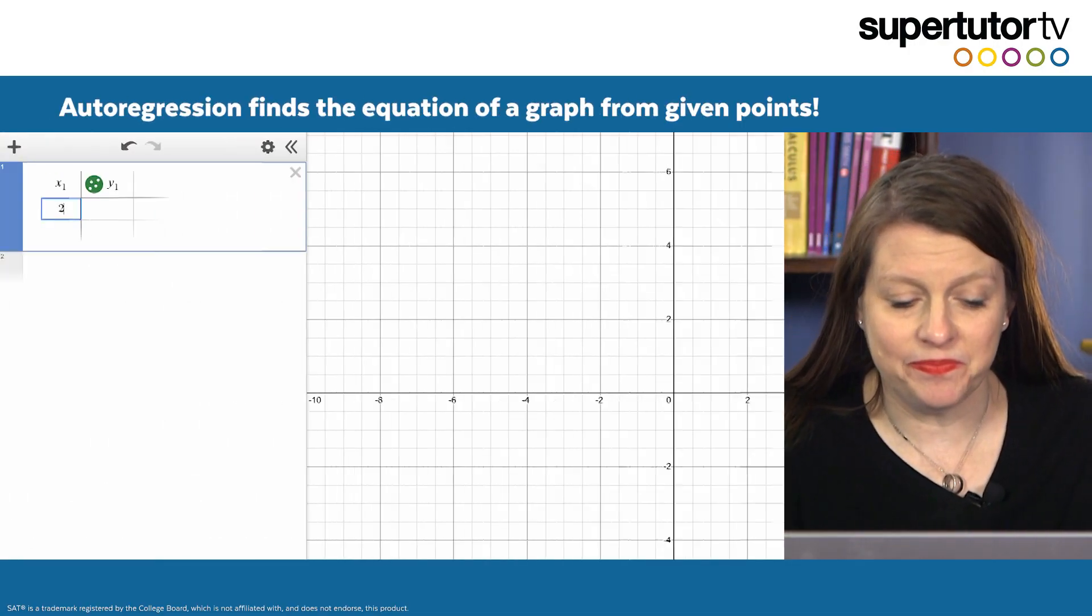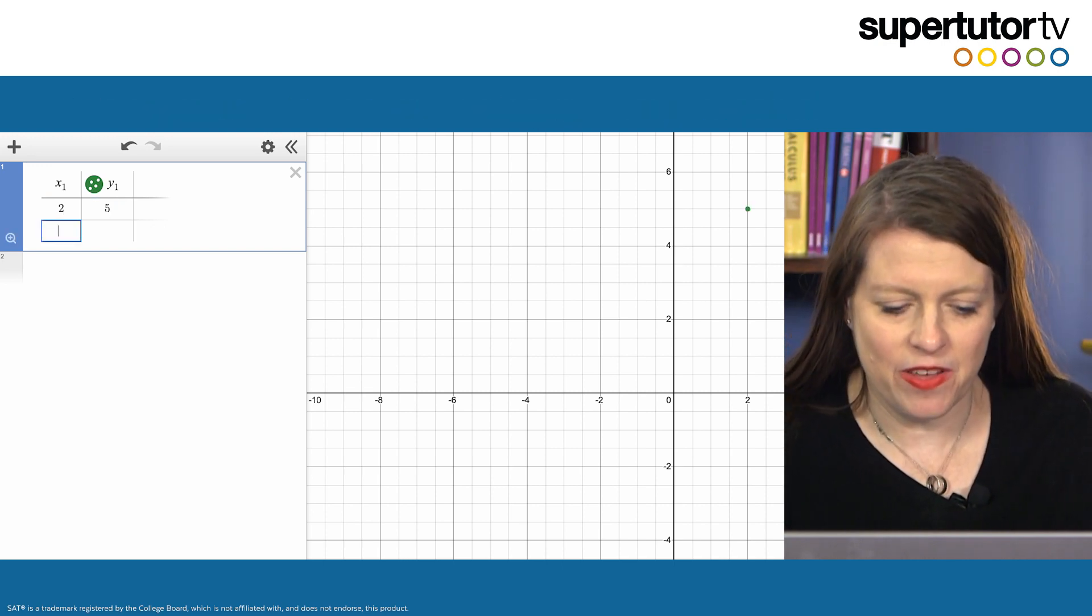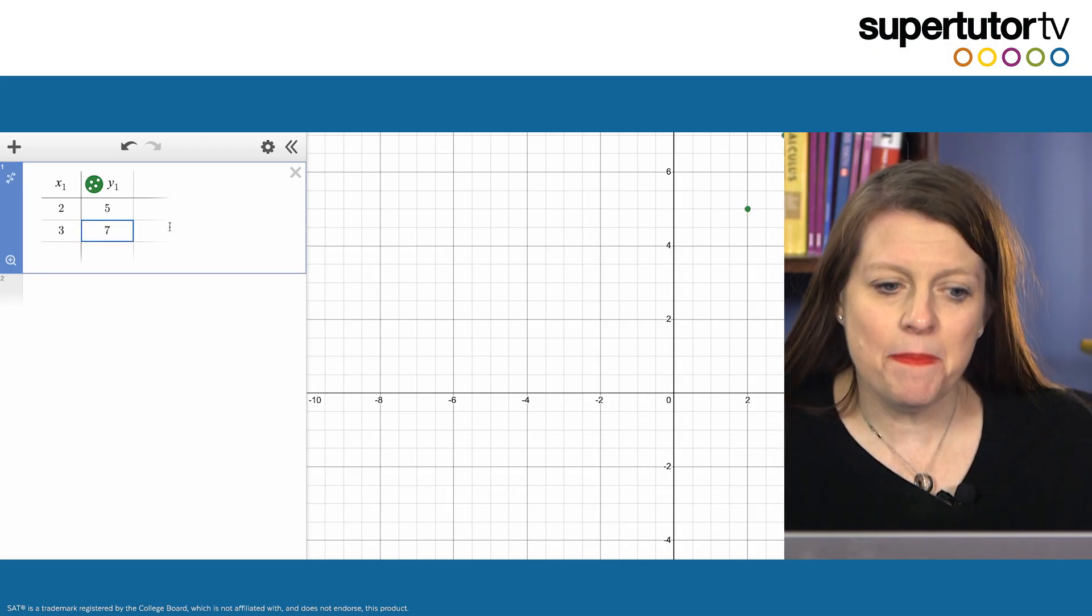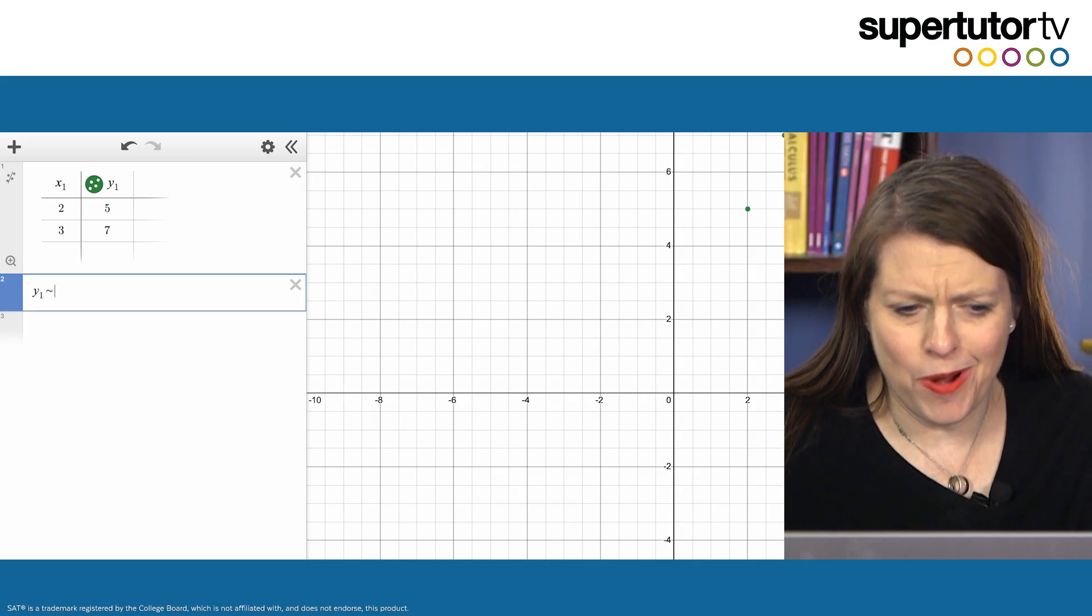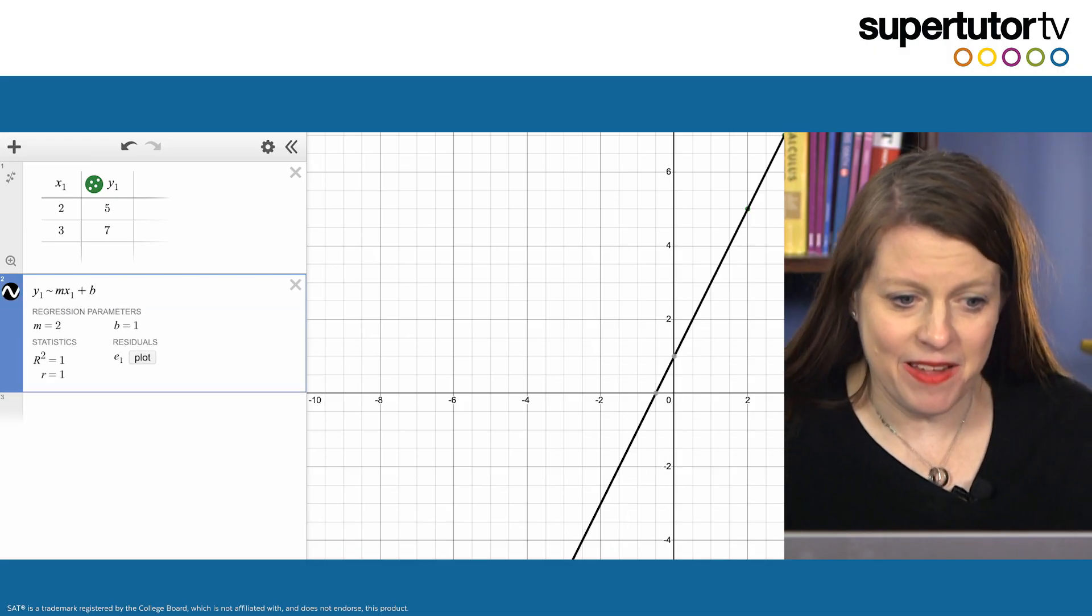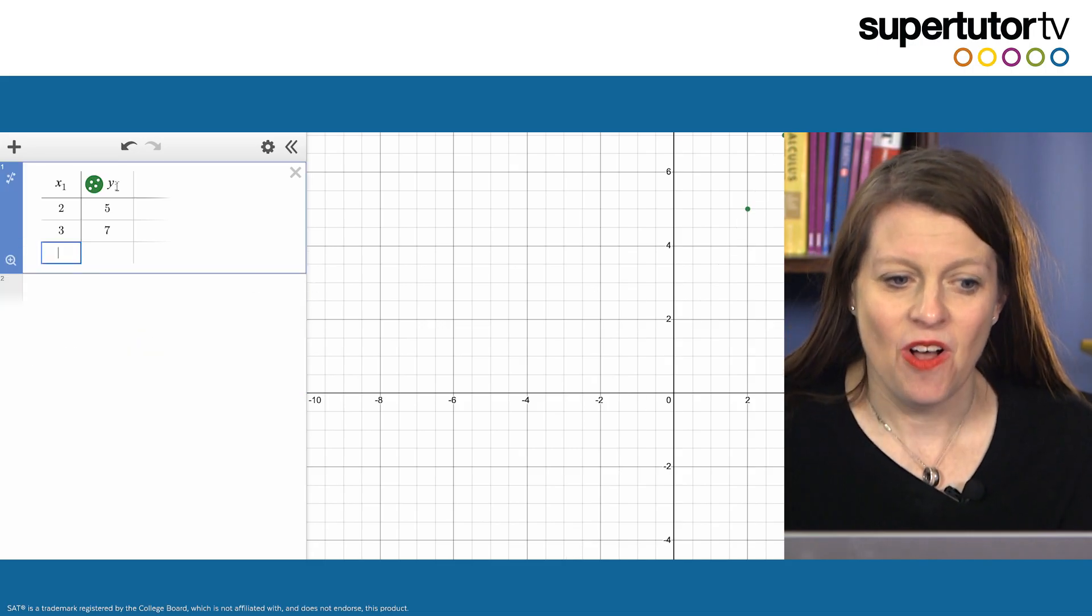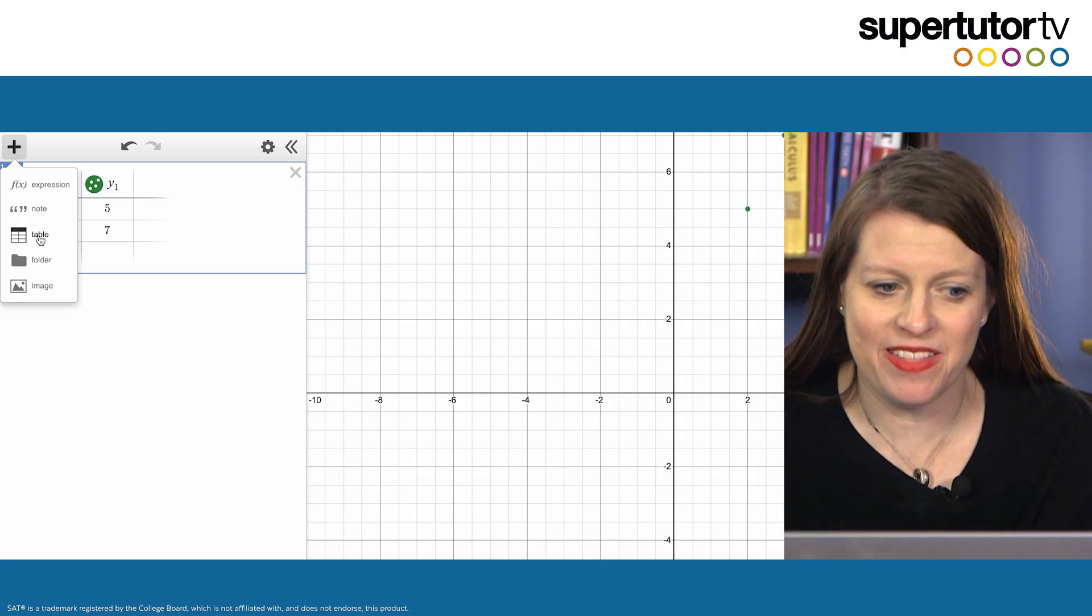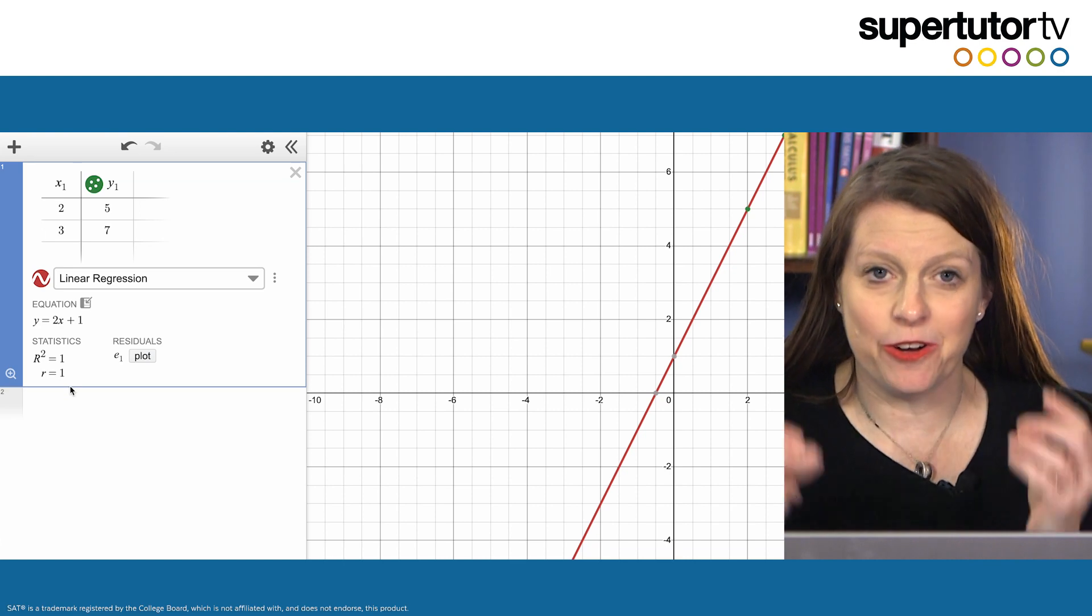Let's say you're given some points like 2,5 on a line and maybe you have another point 3,7. In the past you could do a linear regression by doing y1 tilde mx1 plus b, which still works but here's what's really cool. You don't even have to remember this anymore. All you have to do is fill in the table which you get to by pushing the plus sign up here and then going to table. You push this little button and it automatically does a linear regression. Boom.